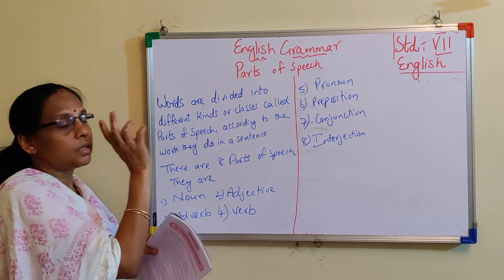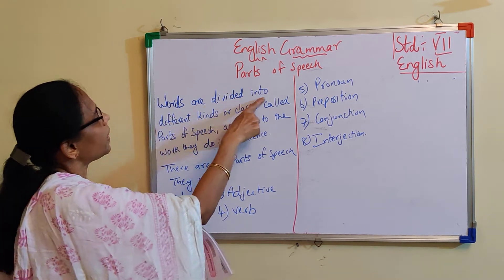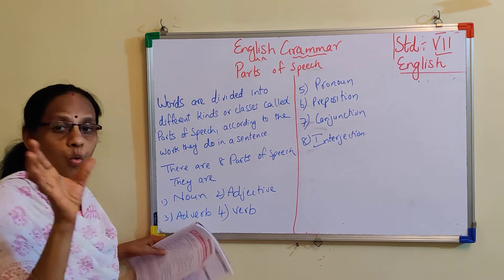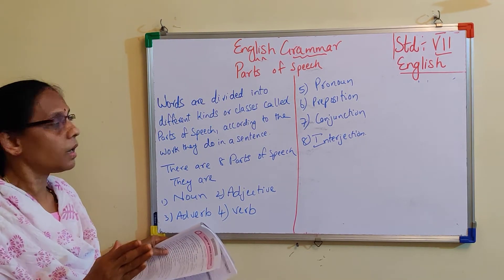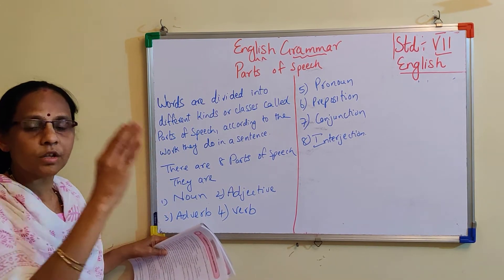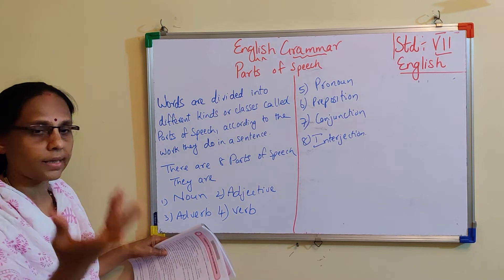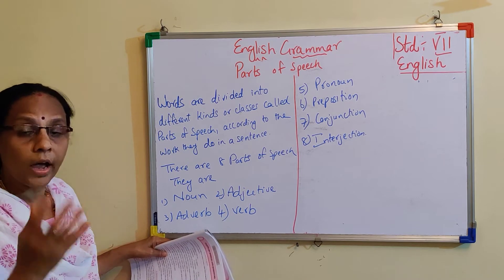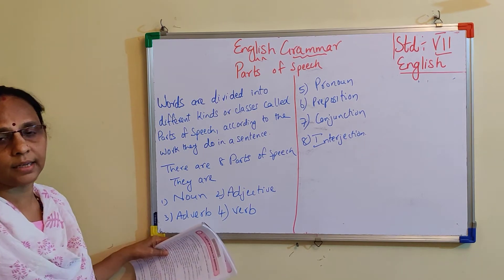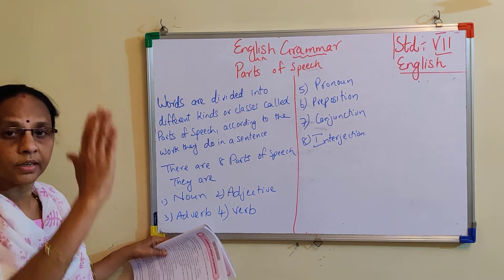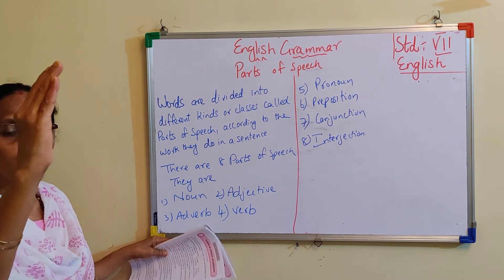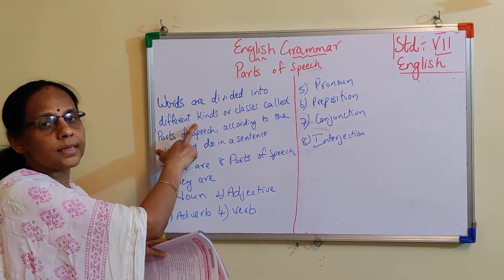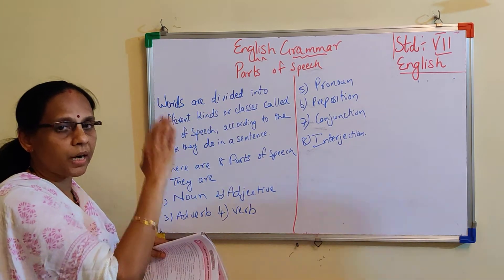So, parts of speech: words are divided into different kinds of classes called parts of speech. Words are divided into different groups of classes, and that is known as parts of speech, according to the work done in a sentence.